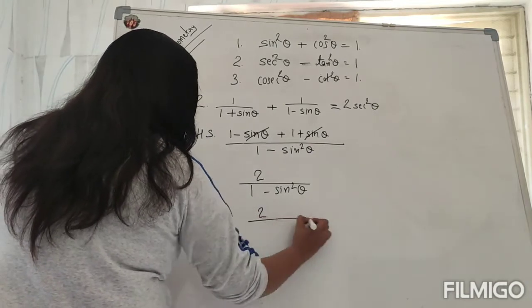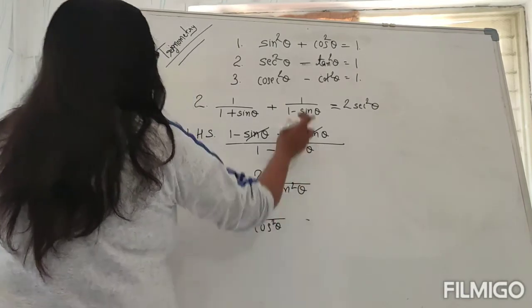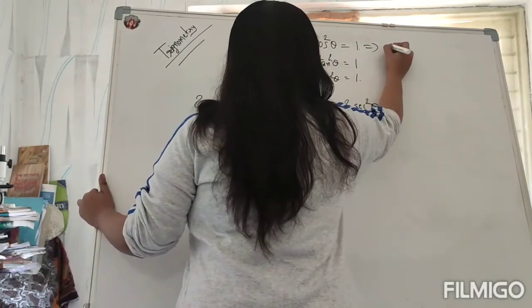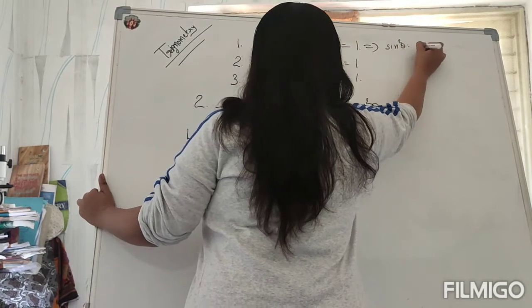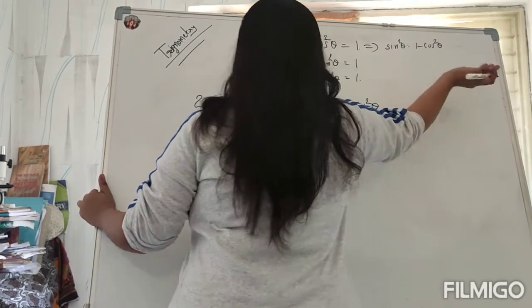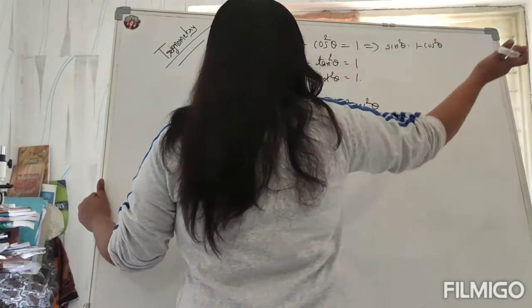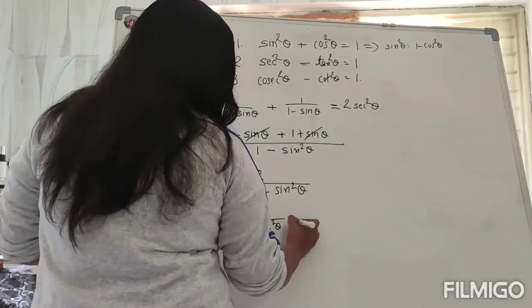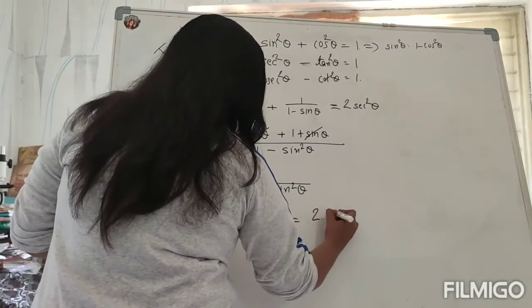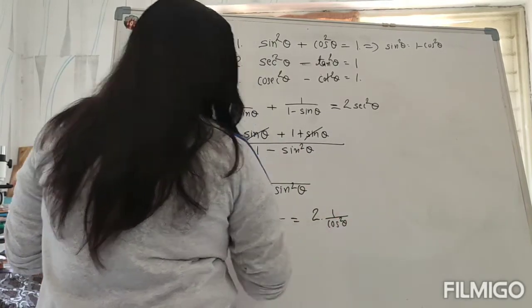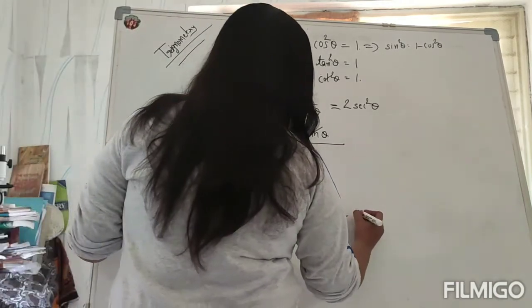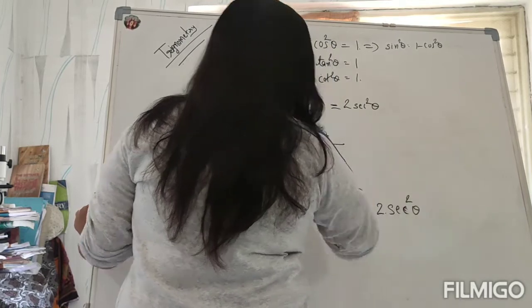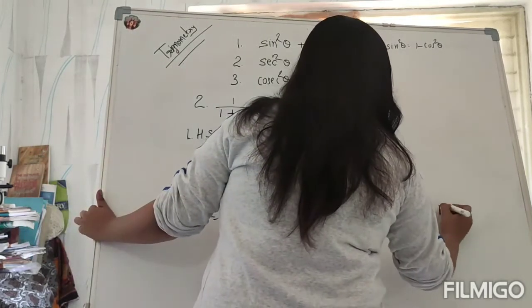So 1 - sin²θ is cos²θ, because sin²θ + cos²θ = 1, so cos²θ = 1 - sin²θ. So here we can write 2 upon cos²θ. And 2 as it is, we can write 1/cos²θ, and 1/cos²θ is sec²θ. So that is 2 sec²θ, which is our RHS.